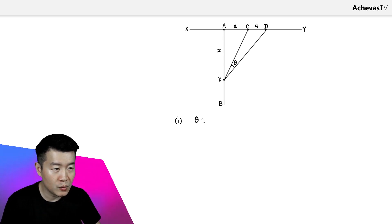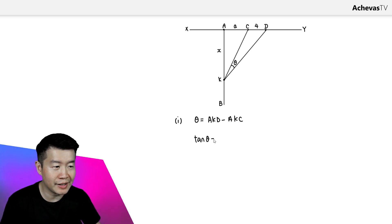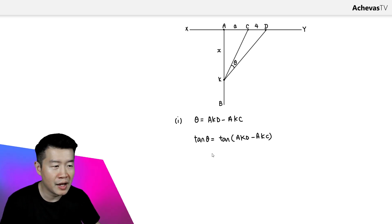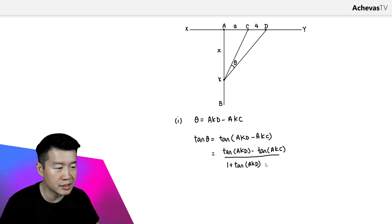We are looking at angle theta, which can be expressed as angle AKD minus angle AKC. To calculate tangent theta, we re-express it as tangent of angle AKD minus angle AKC. By making use of a trigonometric identity, we rewrite this as tangent of angle AKD minus tangent of angle AKC, all divided by 1 plus tangent of angle AKD times tangent of angle AKC.